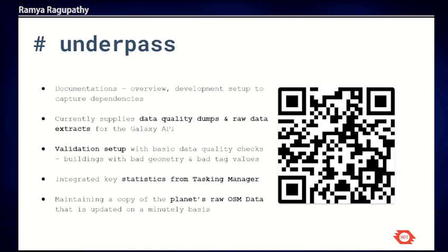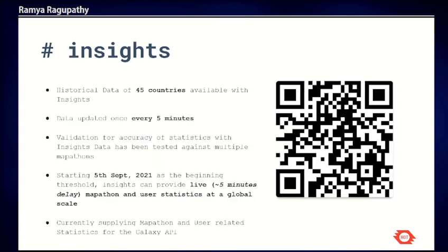Some key progress on Underpass — the QR code links to the GitHub repository; all the code is open source. Underpass currently captures raw data and data quality issues from OpenStreetMap, and we are still validating the statistics being generated. It also has Tasking Manager statistics integrated. The OSM raw data is updated on a minutely basis. The dump is not yet available online, but within about a month it should be accessible for everyone on a weekly basis. We are also planning to put this on the Amazon Open Data Registry.